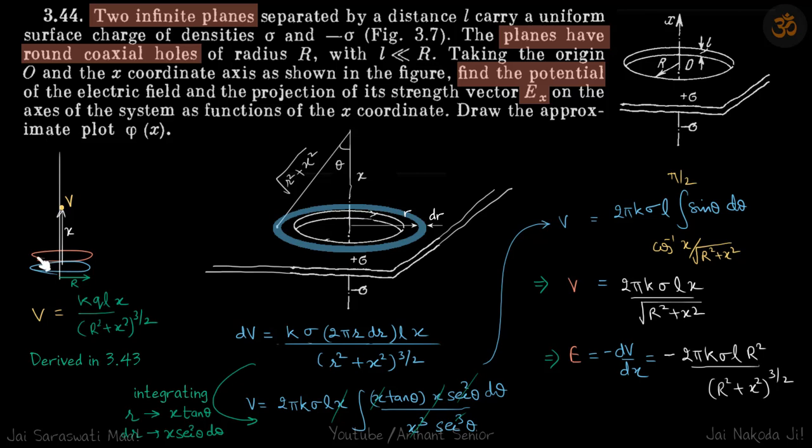Previously we derived the result that the potential for two rings separated by distance l at a distance x is kql·x/(r²+x²)^(3/2). We will use this result by taking an elementary ring at distance r with width dr and finding the potential due to that ring at this point.